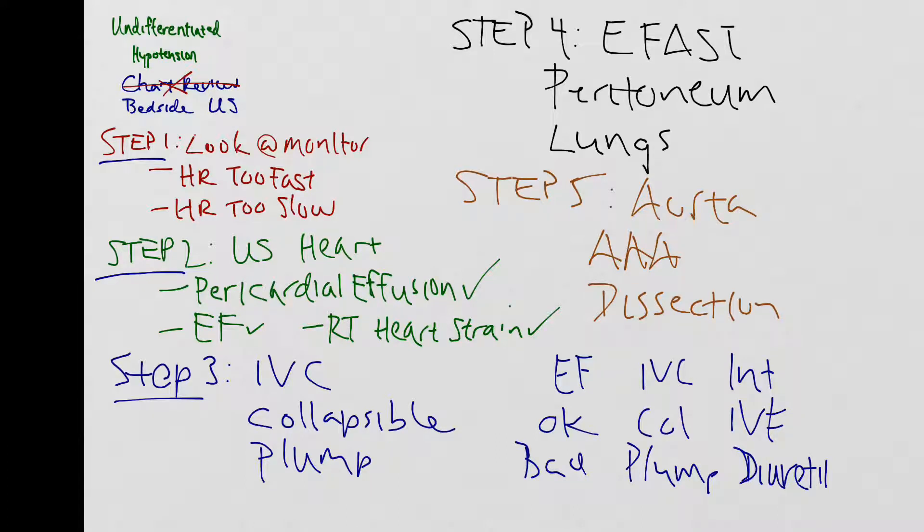And that's it. Looking at these five steps, if you can use them when you are faced with an undifferentiated hypotensive patient, you'll at least have an algorithm and an approach that you can use to get life-saving interventions started.